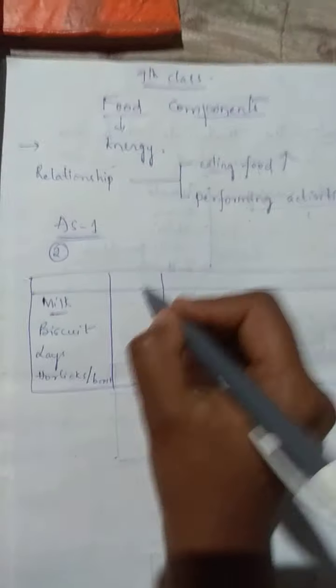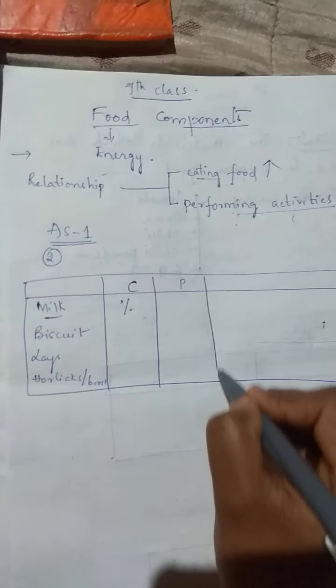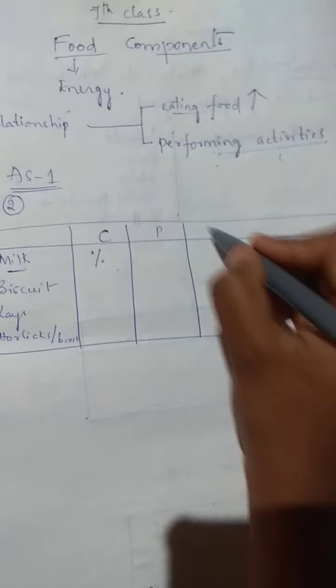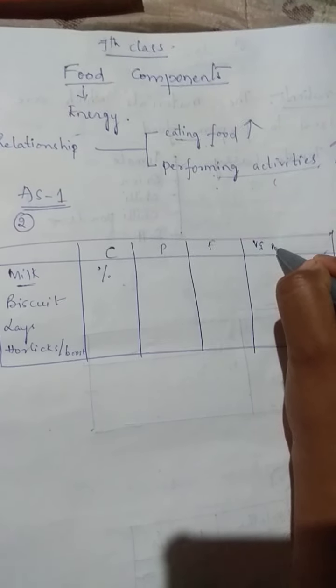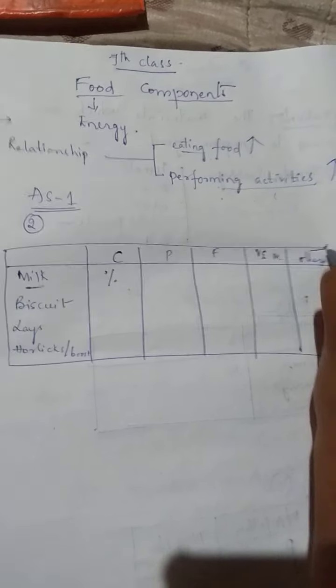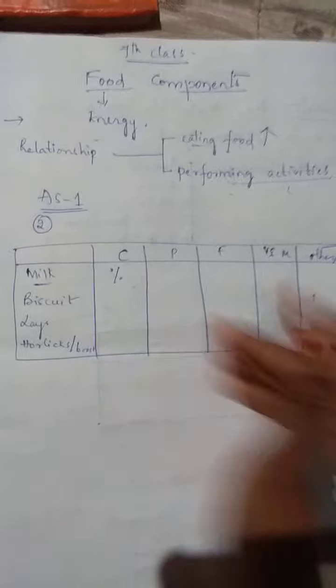Write down how many percent carbohydrates are there, how many percent proteins, how many percent fats, how many percent vitamins and minerals, and if there are any others, what percentage of others.